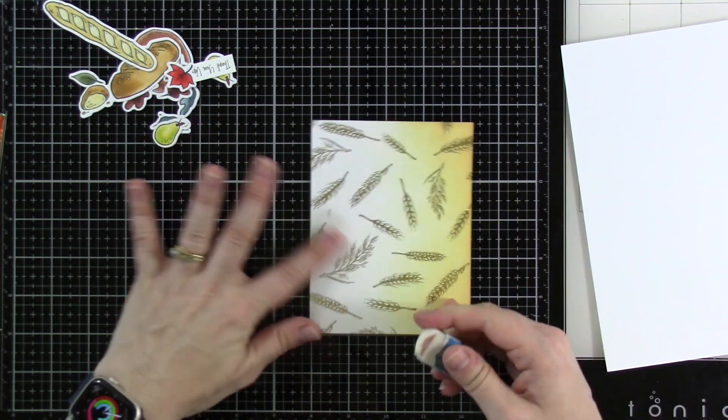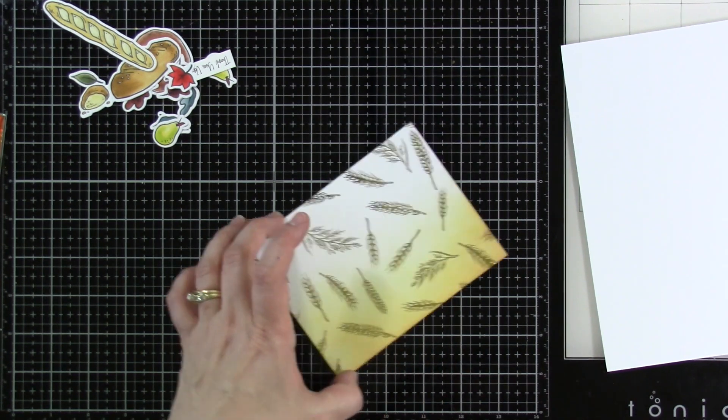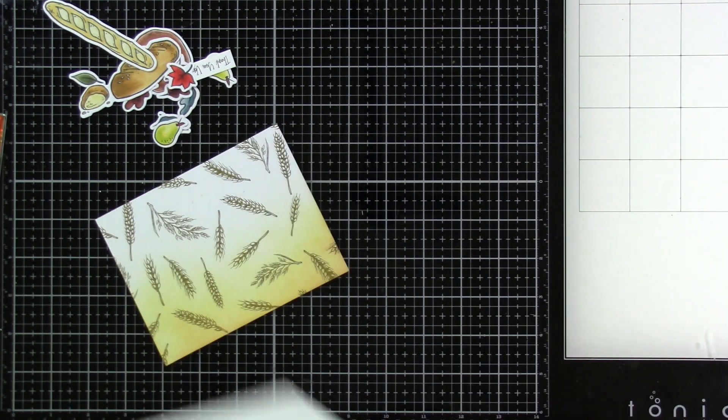If you do have some overfoiling, an eraser will work. Even a sanding eraser would work as well, but just a regular eraser works fine for me.